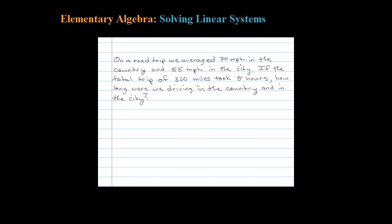On a road trip we averaged 70 miles per hour in the country and 55 miles an hour in the city. If the total trip of 320 miles took five hours, how long were we driving in the country and how long were we driving in the city?